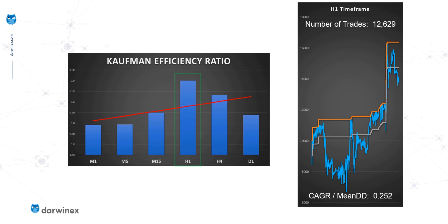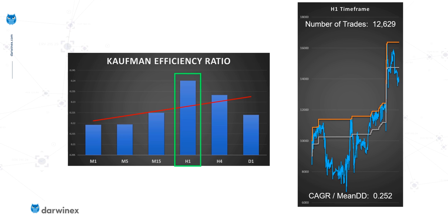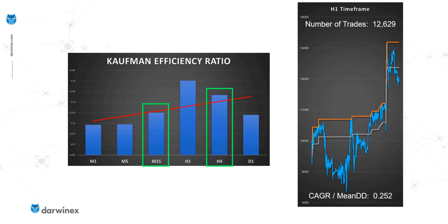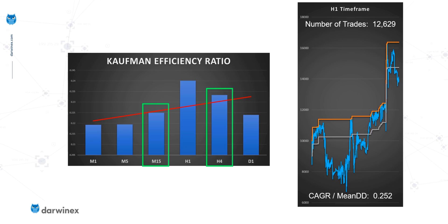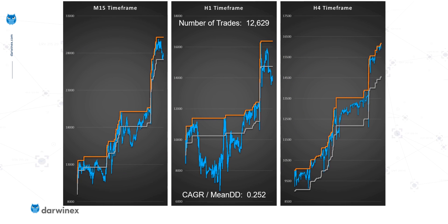We're looking at the H1 time frame, which when measured by the efficiency ratio happens to be the most efficient time frame and therefore the least noisy. So if anything, we'd expect this time frame to give us our worst results for a mean reversion strategy. Let's now take a look at what happens when we see the M15 and the H4 results — and as you can see, both of these produce improvements.